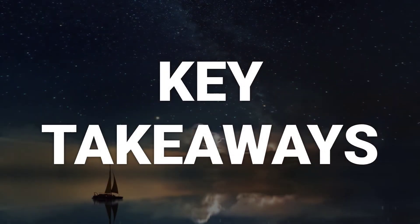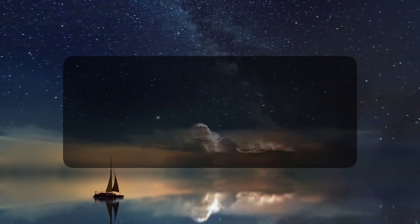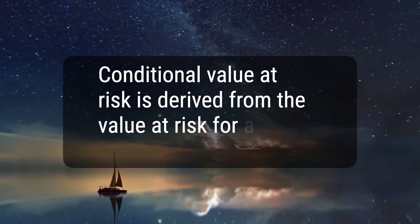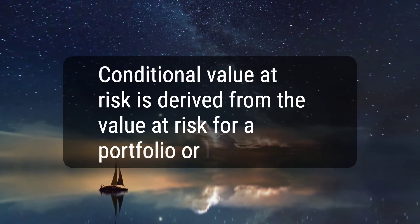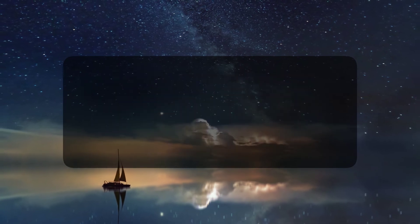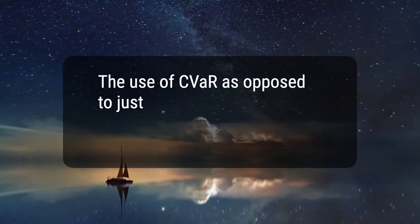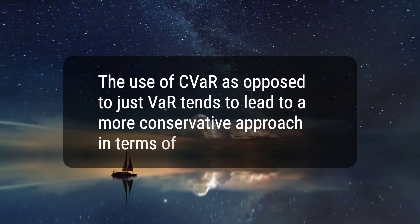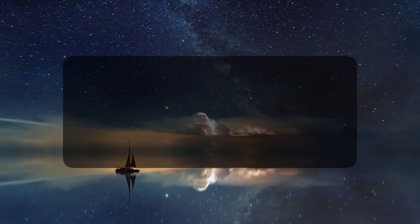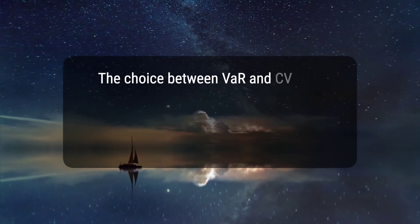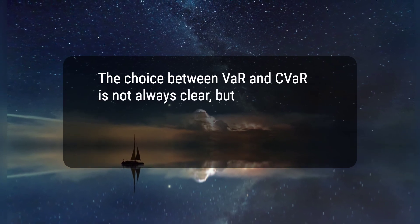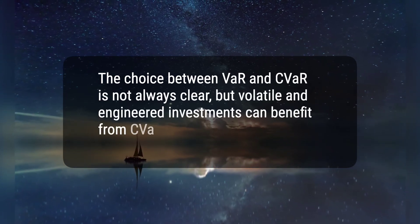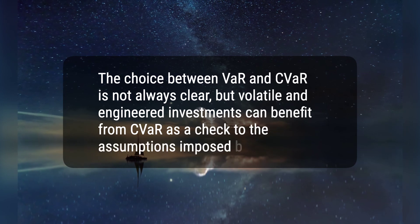Here are three key takeaways. First, Conditional Value at Risk is derived from the Value at Risk for a portfolio or investment. Second, the use of CVaR as opposed to just VAR tends to lead to a more conservative approach in terms of risk exposure. Third, the choice between VAR and CVaR is not always clear, but volatile and engineered investments can benefit from CVaR as a check to the assumptions imposed by VAR.